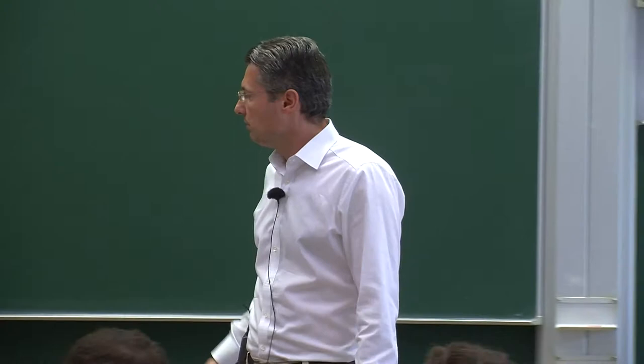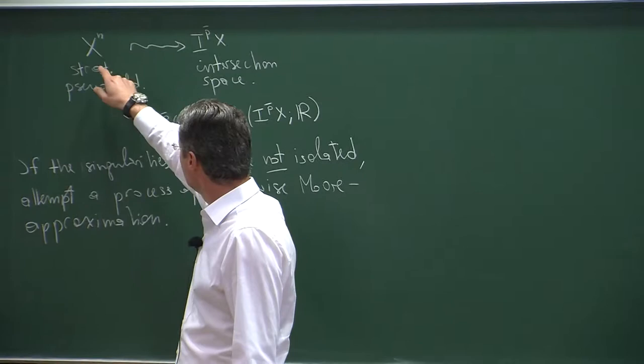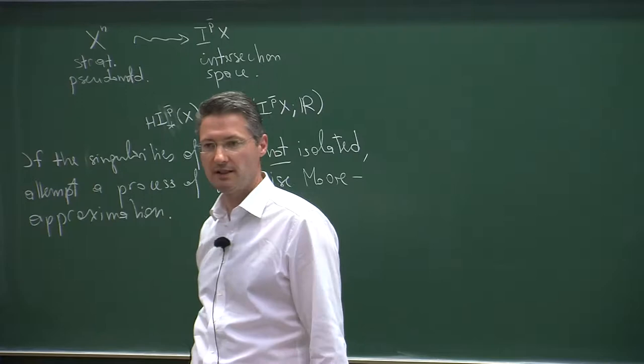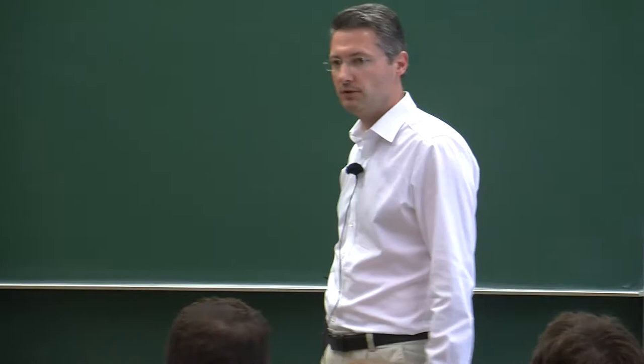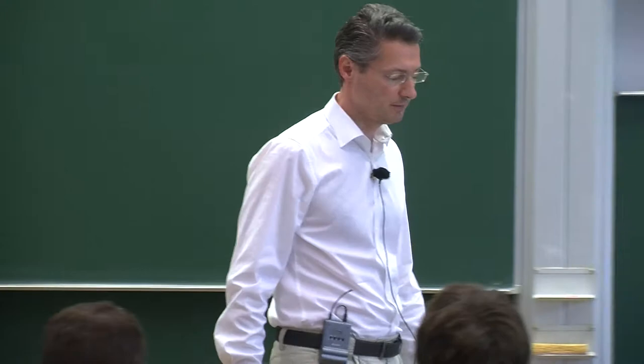Implicitly, this process singles out a class of stratified pseudo-manifolds for which such intersection spaces exist. This goes both ways: if you can form this space, you can draw conclusions about the topology of X, and vice versa. So there is a very interesting tension between all these concepts and structures.